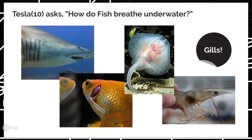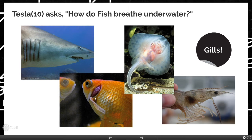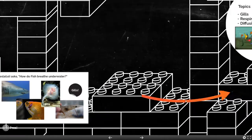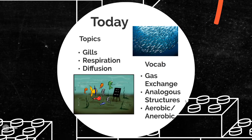Here we've got a couple examples of gills on the screen — this shark here with standard slitted gills on the side, the underside of a stingray showing its gills, your standard pet goldfish with its gills, and these lines on this shrimp are its gills. So we're talking about how do fish breathe underwater, and the things we're going to cover are gills, what respiration is, what it means to breathe, and diffusion. Some vocab terms we're going to use today: gas exchange, analogous structures, and aerobic and anaerobic.